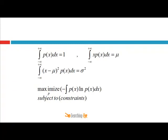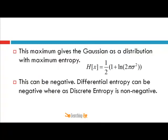On maximizing this entropy function with respect to p subject to these constraints, the maximum entropy is achieved when the distribution is Gaussian. So the Gaussian distribution has maximum entropy, and this maximum differential entropy is given by one half times the quantity one plus log of two pi sigma squared.